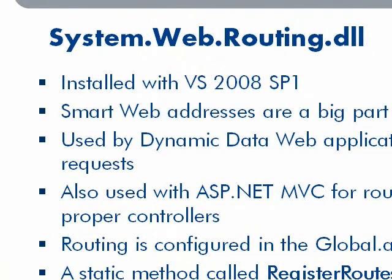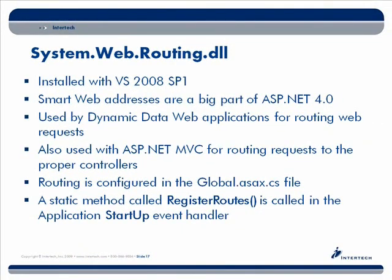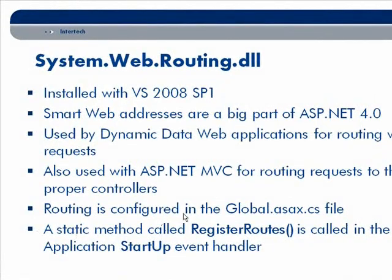With .NET 3.5 Service Pack 1 — also the update for Visual Studio 2008 — you get System.Web.Routing.dll, which allows you to add custom routing to your query strings. You can beautify your query string by passing special information between forward slashes instead of having a giant ASPX file with extra query string parameters. You can take advantage of web routing right away without even using MVC, just by working with routing in your Global.asax file.